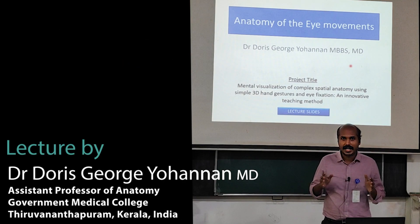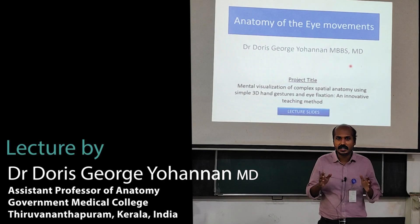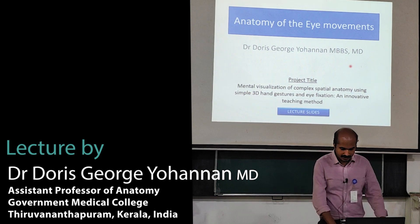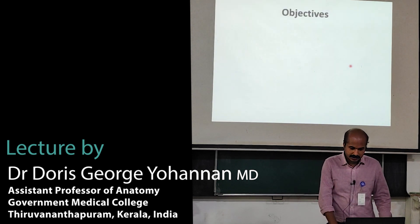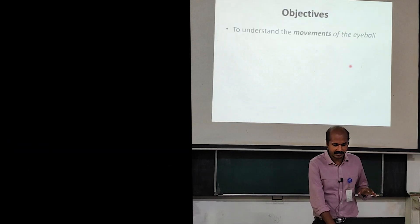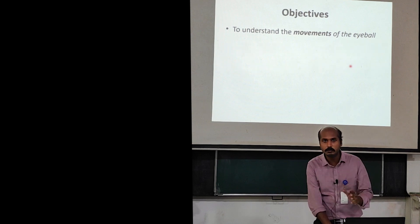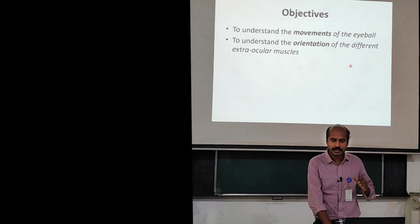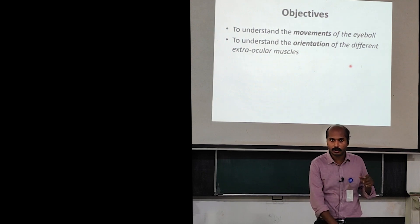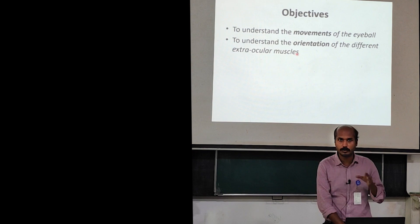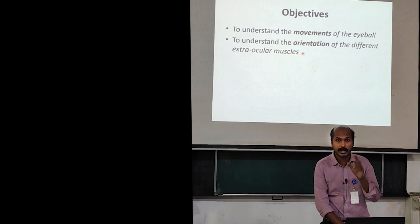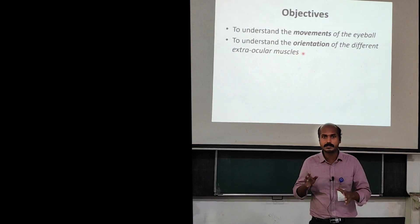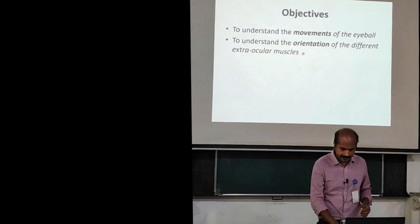Today we are going to learn about the anatomy of eye movements. The objectives of this class are to understand the movements of the eyeball and to understand the orientation of the different extraocular muscles. Extraocular muscles are the muscles that cause movement of the eyeball, and it is very important to know how these muscles are oriented to understand how they act.